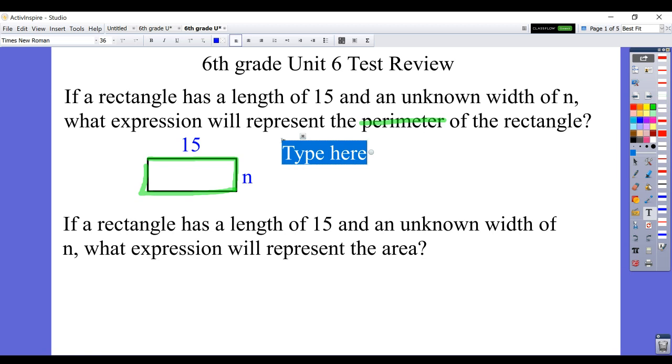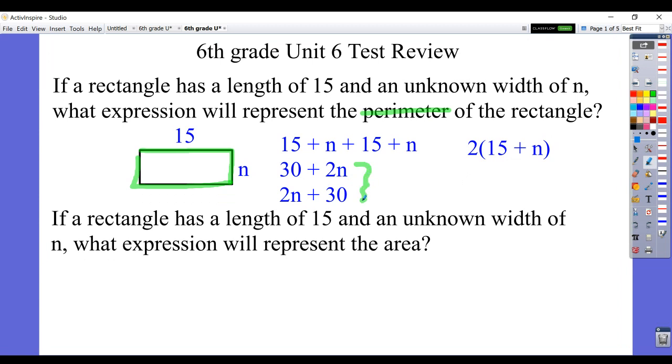So you could write it down as 15 plus n plus 15 plus n. We would typically combine our like terms and make it 30 plus 2n. You could write it as 2n plus 30. Oftentimes, you put the variable term first. We could have written it as 2 times the quantity 15 plus n. But if we had done that, we would have used our distributive property and still simplified it to 2n plus 30. So one of these would be considered probably the best answer that you have as simplified as possible.